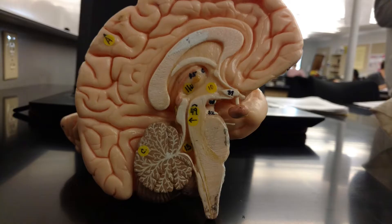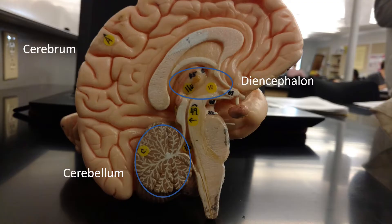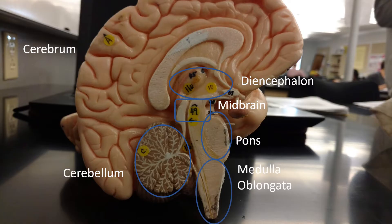From the outside of the brain you can only see the cerebrum and the cerebellum, but when you open the brain up you can see more regions: there's the diencephalon, the midbrain, pons, and medulla oblongata. Together, the midbrain, pons, and medulla oblongata make up the brain stem.